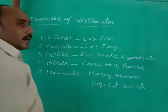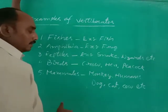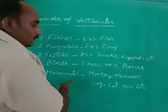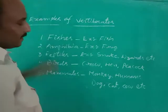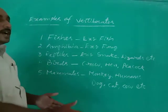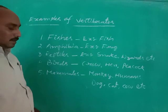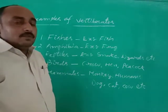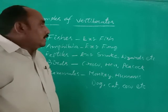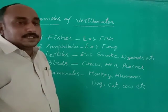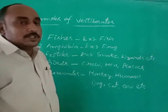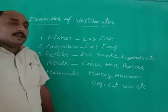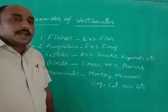All milk-producing organisms are examples of mammals. This is the classification of animals. In the next class, we will be discussing the classification of plants. Read carefully and write all these in your notebook. Thank you.